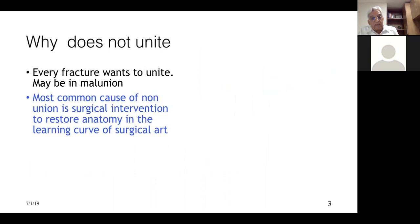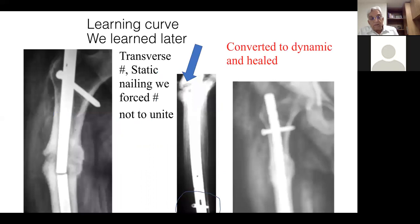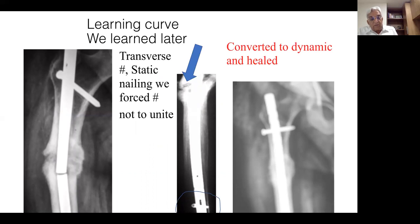Every fracture wants to unite, maybe in malunion. The most common cause of non-union is surgical intervention to restore anatomy during the learning curve of the surgical art — and that learning curve lasts for life for most of us. I learned over time that a fracture would have united if it had been kept in a dynamic mode to start with. I had done interlocking in a static mode as we were all told to do, and this fracture did not unite. All I had to do was convert this transverse fracture from static nailing to dynamic mode, and the fracture united.